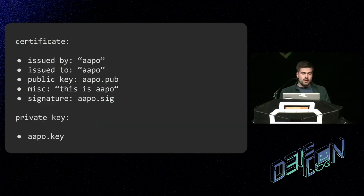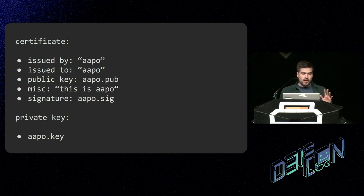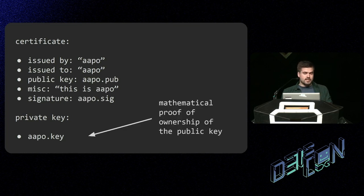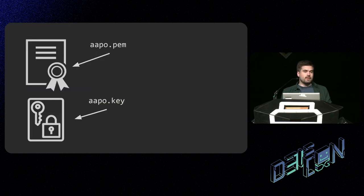For example, you have a certificate that is issued by someone and issued to someone. It may contain a public key — this is for the encryption part. Also some information, like this is the AAPO certificate. And of course there is a signature to validate all this data. How do you make these signatures? You have your private key. With your private key you can calculate the signature and have this mathematical proof of ownership of the public key. So in a sense, you have a certificate and you have a key, and this key allows you to use your certificate.